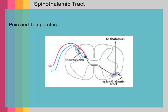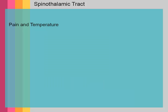This slide shows how the information which carries pain and temperature has its first-order neuron in the dorsal root ganglia. It sends its axonal projection into the spinal cord into the substantia gelatinosa, where it makes a synapse so that the second-order neuron crosses anterior to the gray matter of the spinal cord, to then ultimately ascend in the lateral spinothalamic tract.